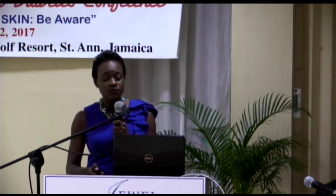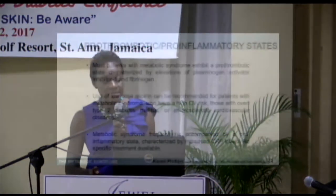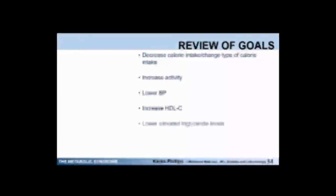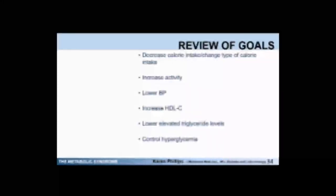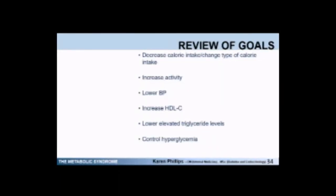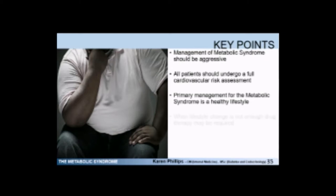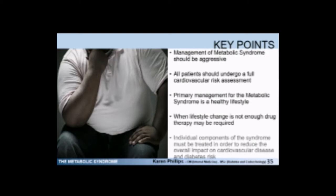The metabolic syndrome is frequently accompanied by a pro-inflammatory state characterized by high CRP levels, but there's no specific treatment available for this. In terms of goals: decrease caloric intake, change the type of caloric intake, decrease carbs, increase activity, lower blood pressure, increase HDL cholesterol, lower elevated triglycerides, and control hyperglycemia. Management should be aggressive. All patients should undergo a full cardiovascular risk assessment. Primary management is a healthy lifestyle; when lifestyle change is not enough, drug therapy may be required. The individual components of the syndrome must be treated to reduce the overall impact on cardiovascular disease and diabetes risk. Thank you.